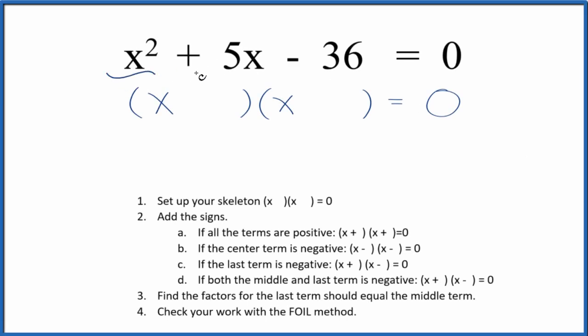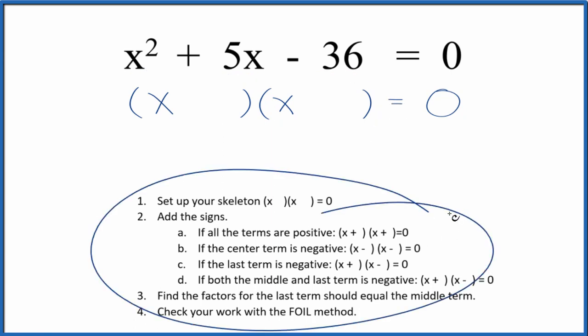Let's factor the equation x squared plus 5x minus 36. And we'll use these guidelines here to help us do that. The first thing we want to do is set up our skeleton equation. So I've done that right here already.